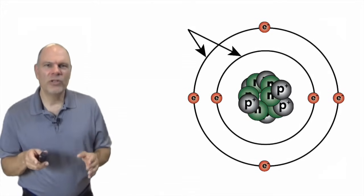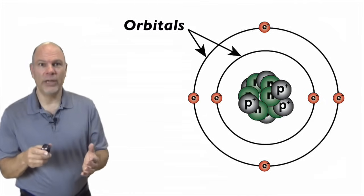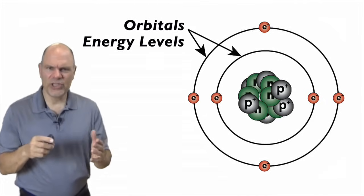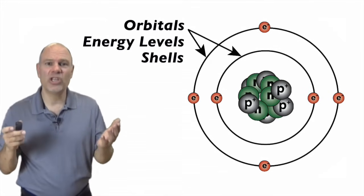The region where electrons are found has three names. They're called orbitals. You can remember the word orbit. They're called energy levels, and we'll see that's because the amount of energy is corresponding to where they are, and they're also simply called shells.